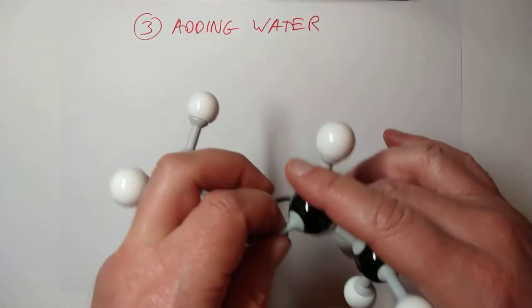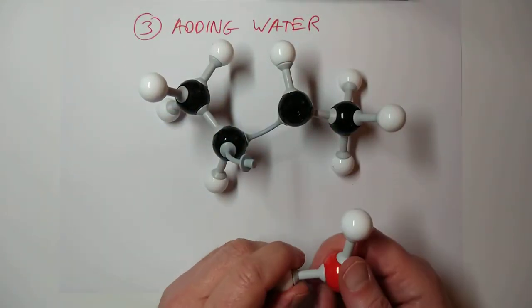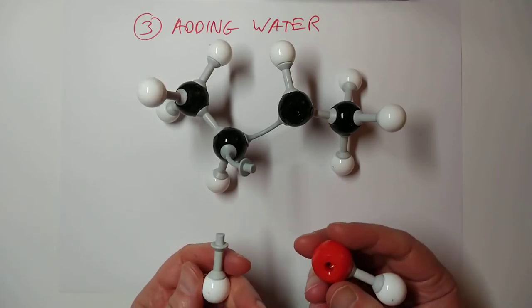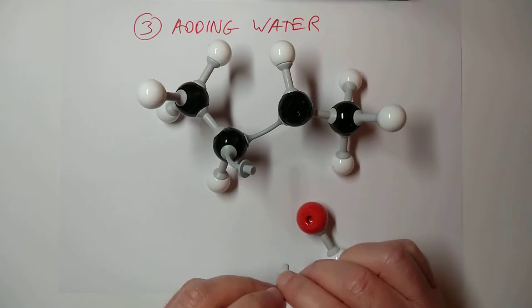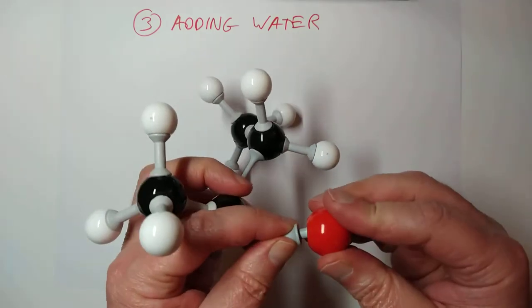So, let's do an addition reaction on this again, using this. Now, this time around, I'll break the double bond there. And this guy here, the only option really is to break that. Now, what on earth are we going to do here? Let's pop this hydrogen on here. And let's pop this onto here.